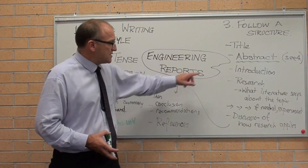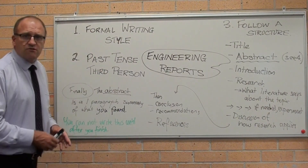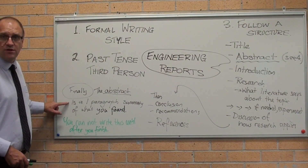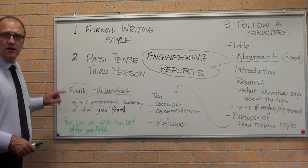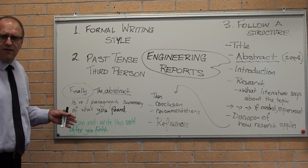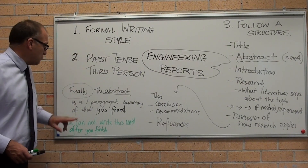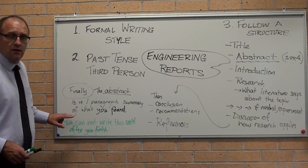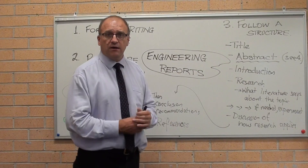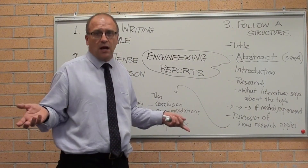Now before I go any further, I mentioned the abstract. What the abstract is — it's a one paragraph summary of what you found. You cannot write it until you have finished absolutely everything and you know what you found. So the abstract is written last, but it goes straight under the title. Somebody reads the title, then they read what you found, and they decide if it's worth going any further.